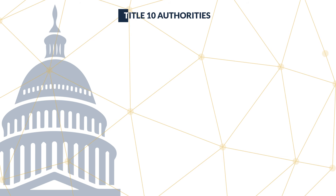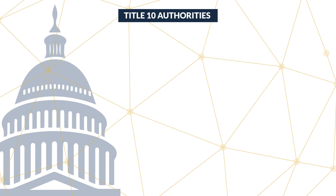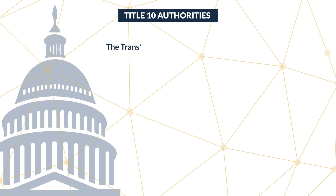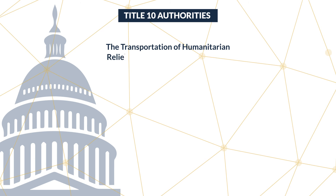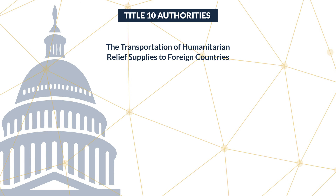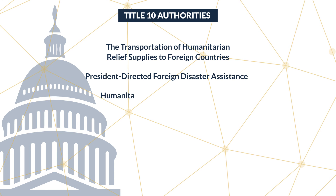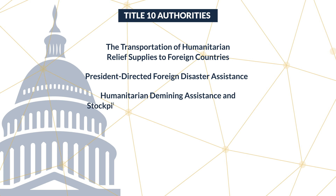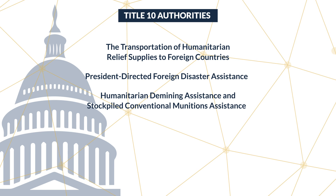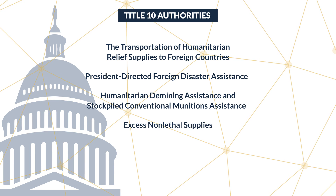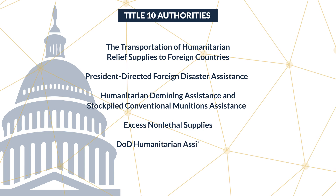DSCA relies upon five different Title X authorities that enable DOD HA and FDR activities. They are the transportation of humanitarian relief supplies to foreign countries, president-directed foreign disaster assistance, humanitarian demining assistance and stockpiled conventional munitions assistance, excess non-lethal supplies, and DOD humanitarian assistance.